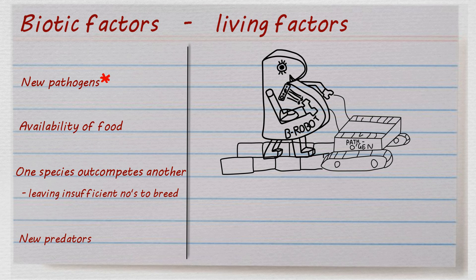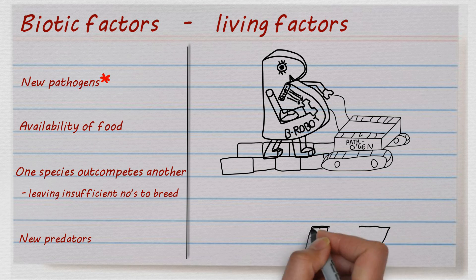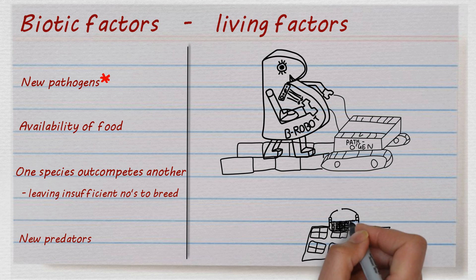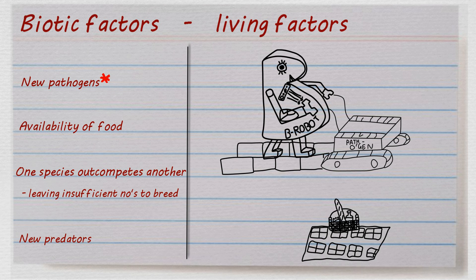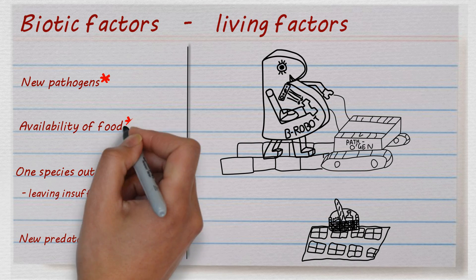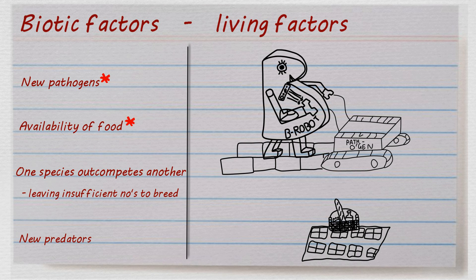The B robot keeps glancing hungrily towards a picnic rug. You realize that its picnic is set out on the rug, so there is food available for it. That's another biotic factor: availability of food.